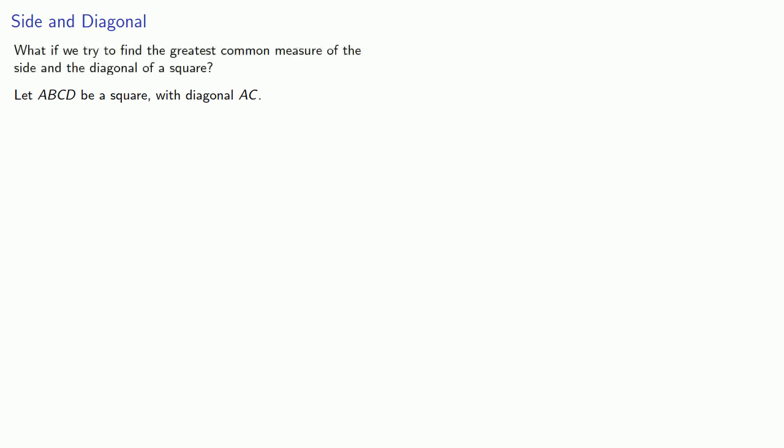While the Euclidean algorithm is typically applied to numbers, it's important to keep in mind that we could apply it to geometric figures as well — and in fact, this is probably how it was first discovered. And this leads to an interesting problem: what if we try to find the greatest common measure of the side and diagonal of a square?